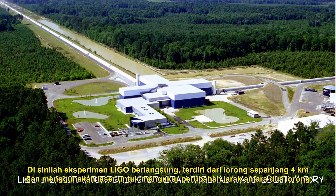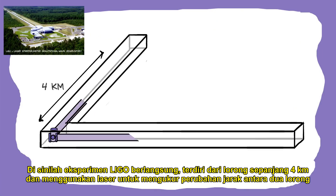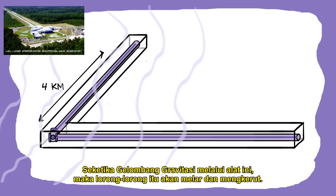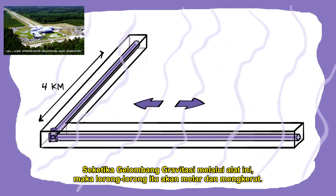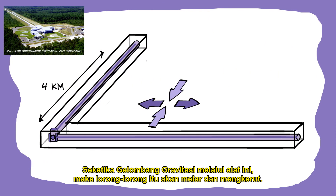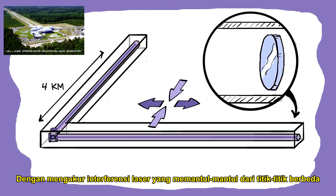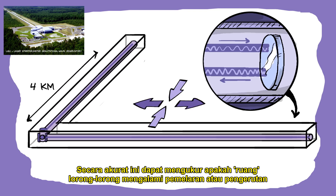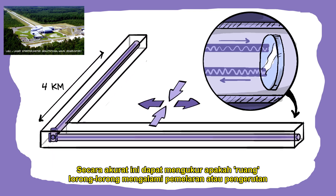This is where the LIGO experiment comes in. It has four-kilometer-long tunnels and uses lasers to measure the changes in the distance between the ends of the tunnels. When a gravitational wave comes through, it stretches space in one direction and squeezes space in the other direction. By measuring the interference of the lasers as they bounce between the different points, physicists can measure very precisely whether the space in between has stretched or compressed.